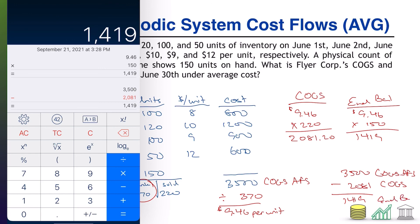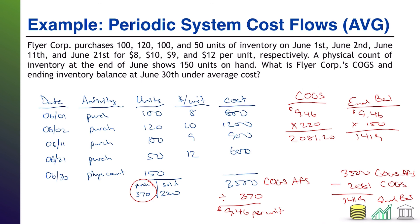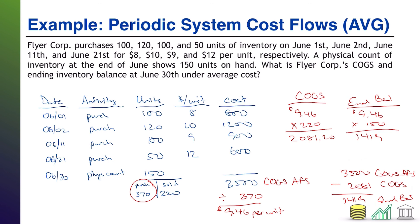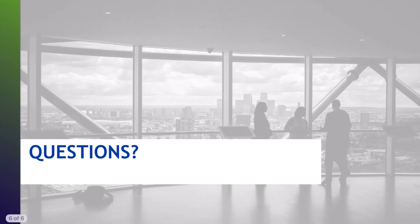That's how you do average cost. So that was cost flows specifically in a periodic system. Notice we didn't even talk about when the sales took place — because it doesn't matter when sales took place. All that matters in a periodic system is what you sold, what your total goods available for sale were, and the various costs of those batches. It's a lot simpler than dealing with a perpetual system where you have to figure out cost of goods sold on a day-by-day basis every time you make a sale. Hopefully you found this helpful — see you in the next video.